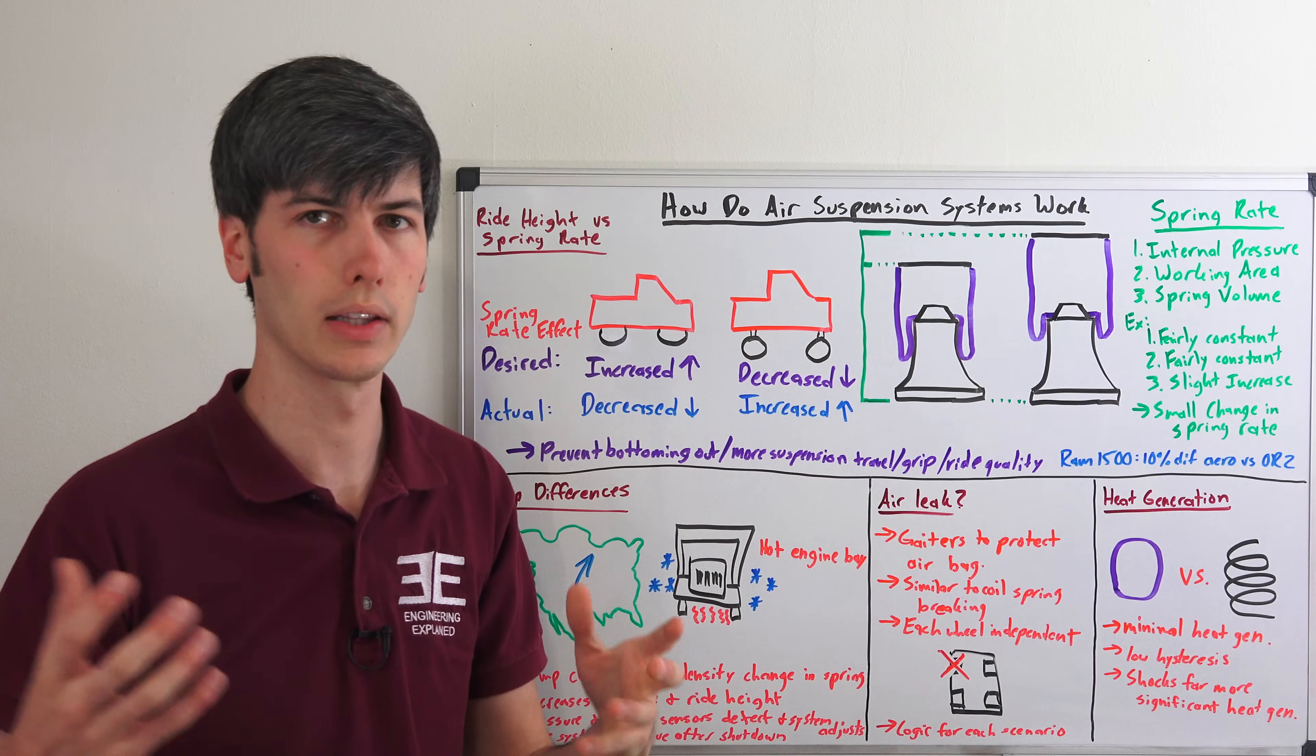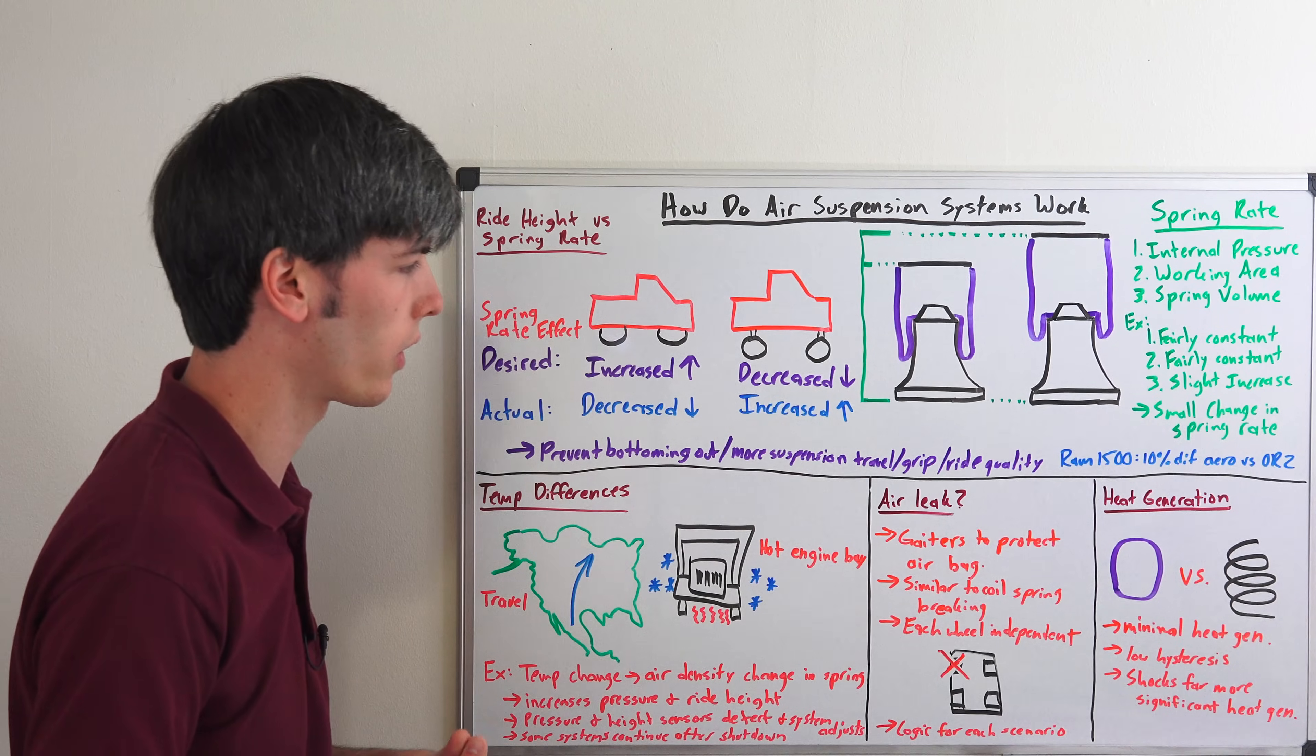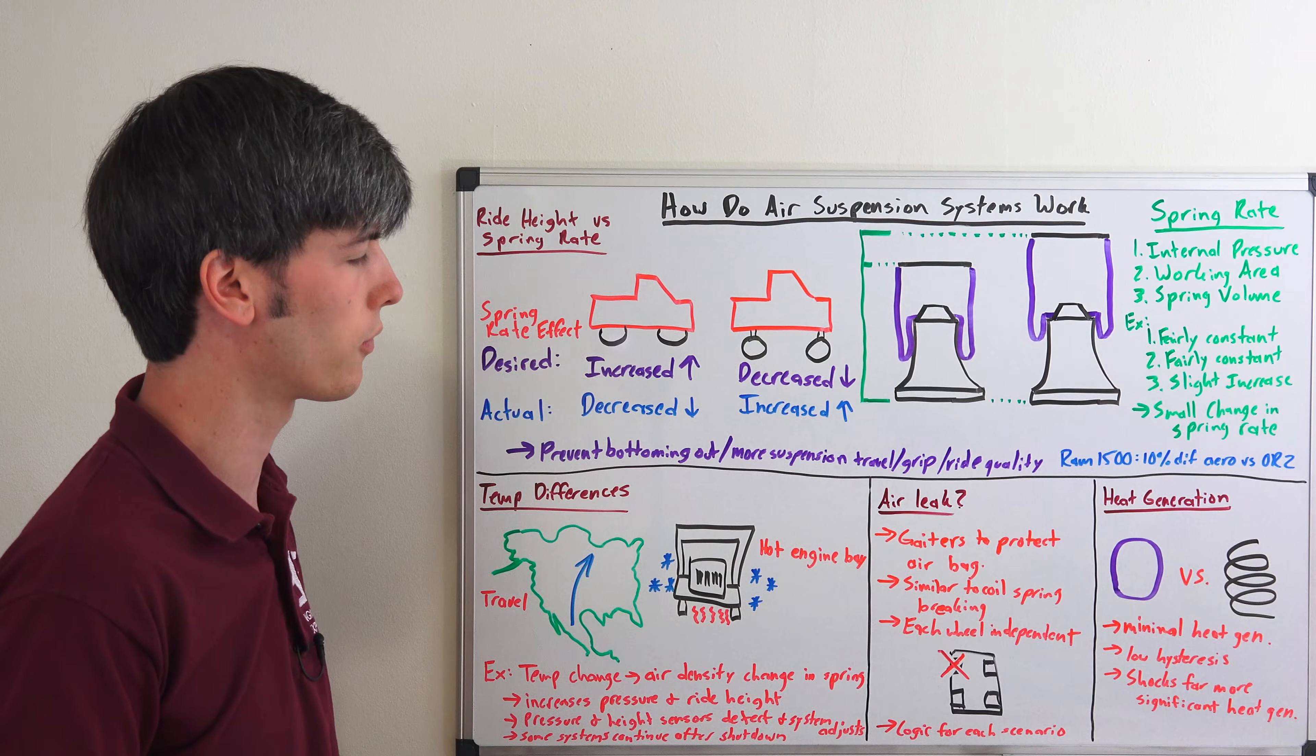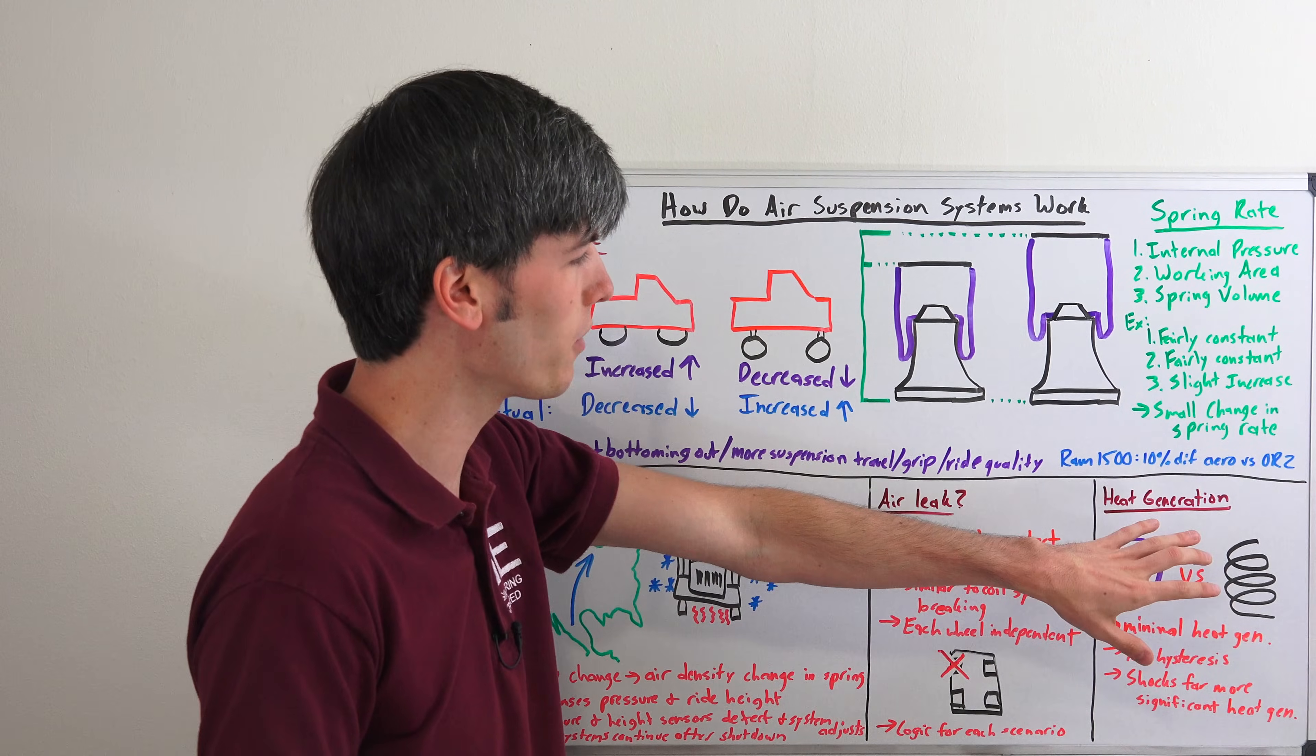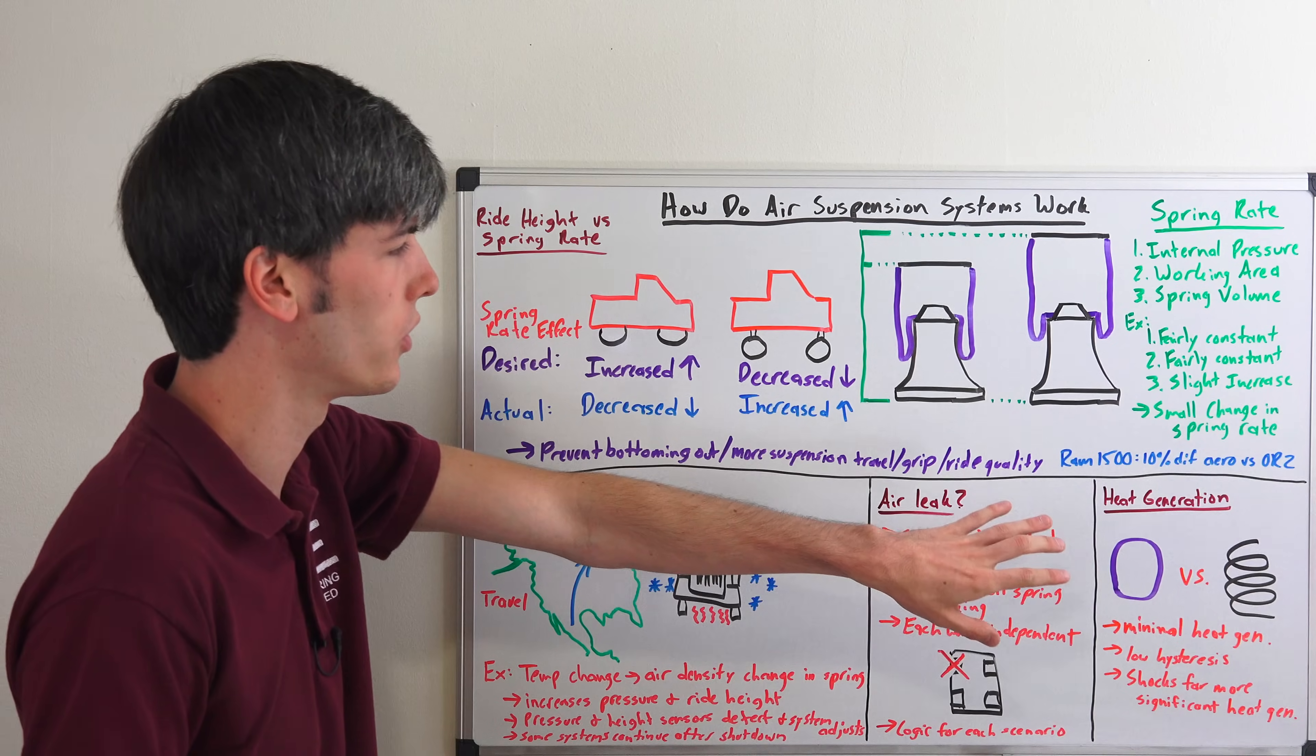Then there's logic put in place for how the system is going to handle that scenario. Whether you can limp home or whether you're going to need a tow, something like that, depending on the severity of the leak. If it's just a very small leak, maybe it may be able to compensate for it for a short duration.